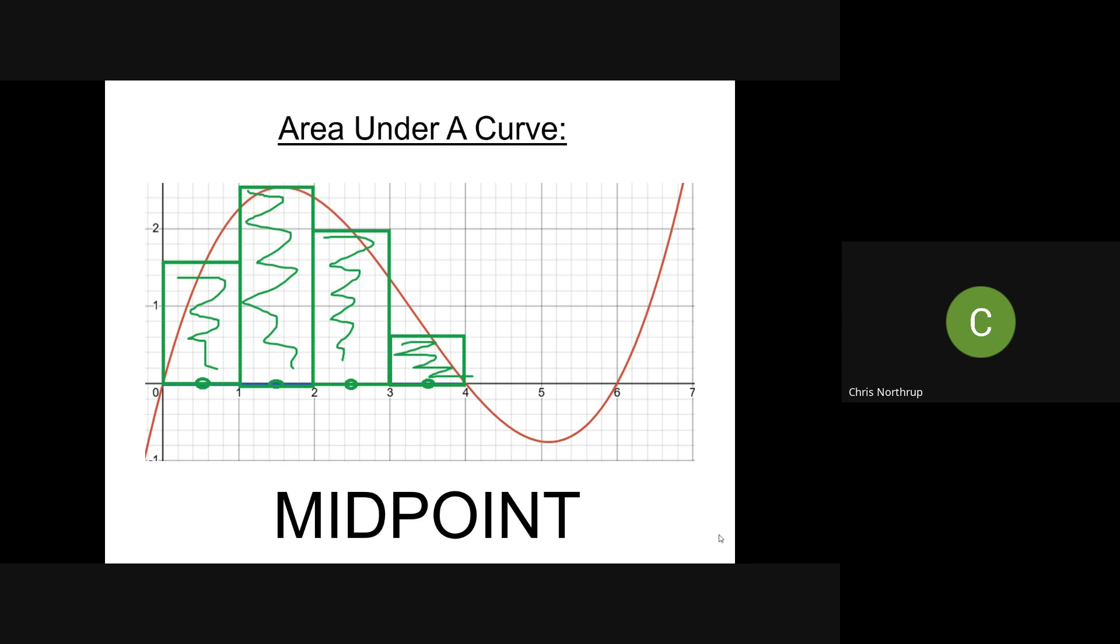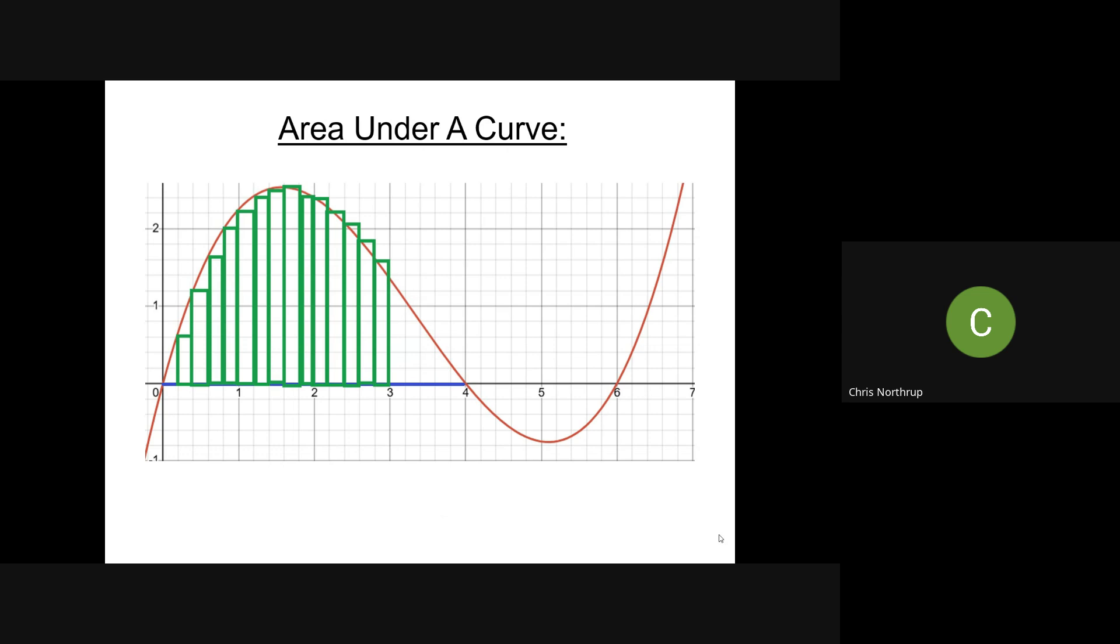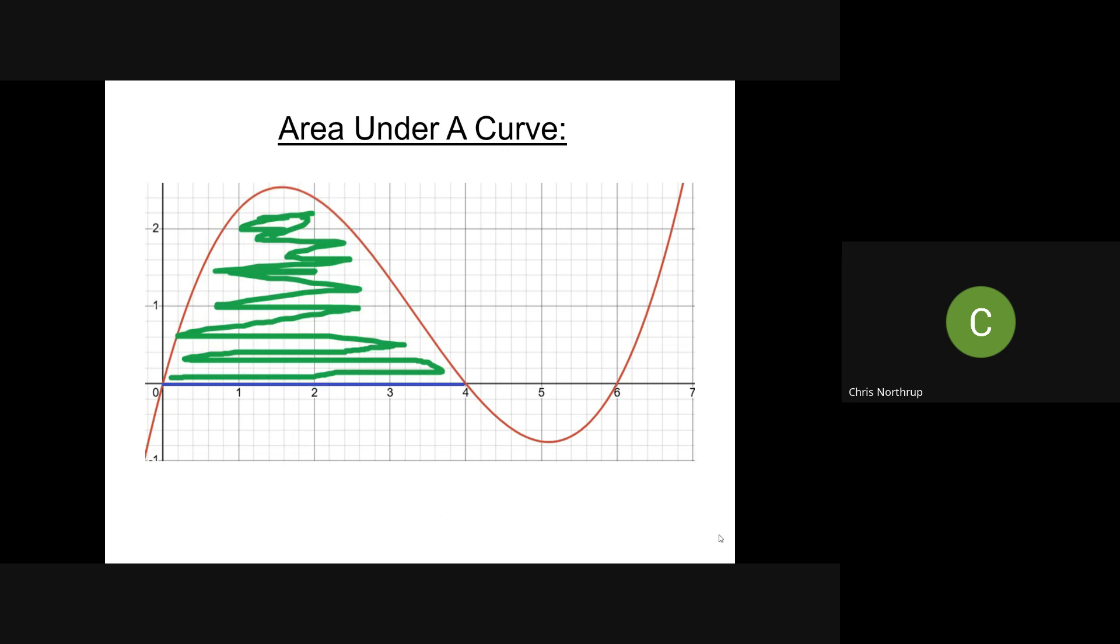If you wanted to increase the accuracy, obviously you could tell that it's not really accurate, you could look at the interval and cut it into smaller pieces and get more rectangles, and even smaller pieces and get more rectangles. And then if you cut it into like an infinitely amount of rectangles and fill in the entire thing, that would give you the exact area, which we'll do later.